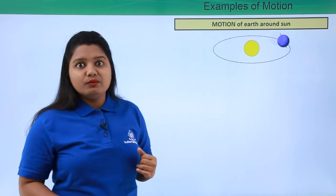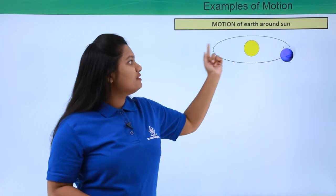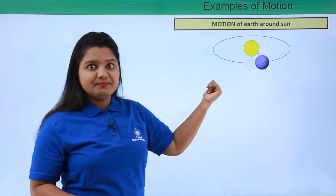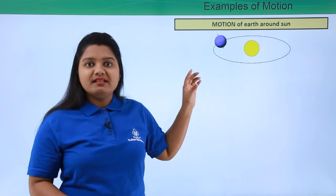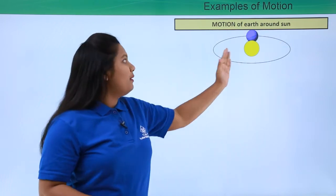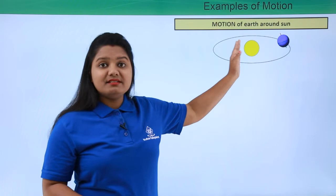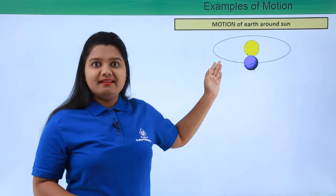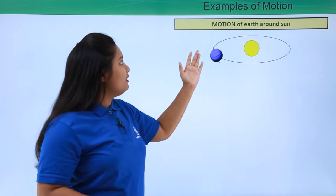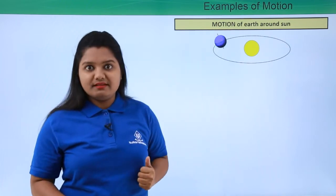Now let me take the same example, that is motion of earth around sun. We all know that earth moves around sun in an elliptical path, that is it revolves around the sun, and also it rotates about a fixed axis at its own position. So earth is having two kinds of motion in this case.